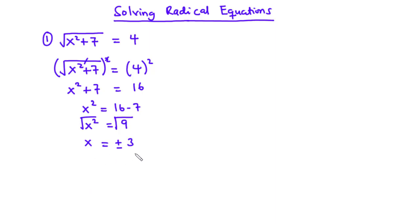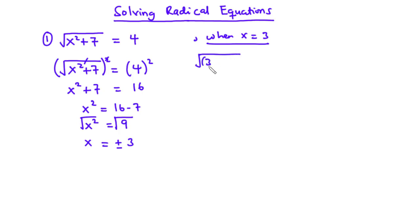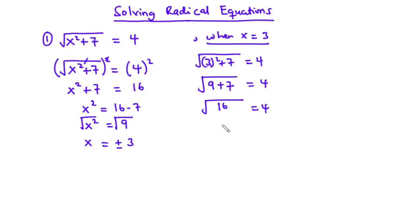Let's check for the two values: x equals 3 and x equals negative 3. When x is equal to 3, we substitute 3 into the original equation. We have the square root of 3 squared plus 7 equals 4. 3 squared is 9, so 9 plus 7 equals 16, and the square root of 16 is 4. Since 4 equals 4, x equals 3 is a solution.